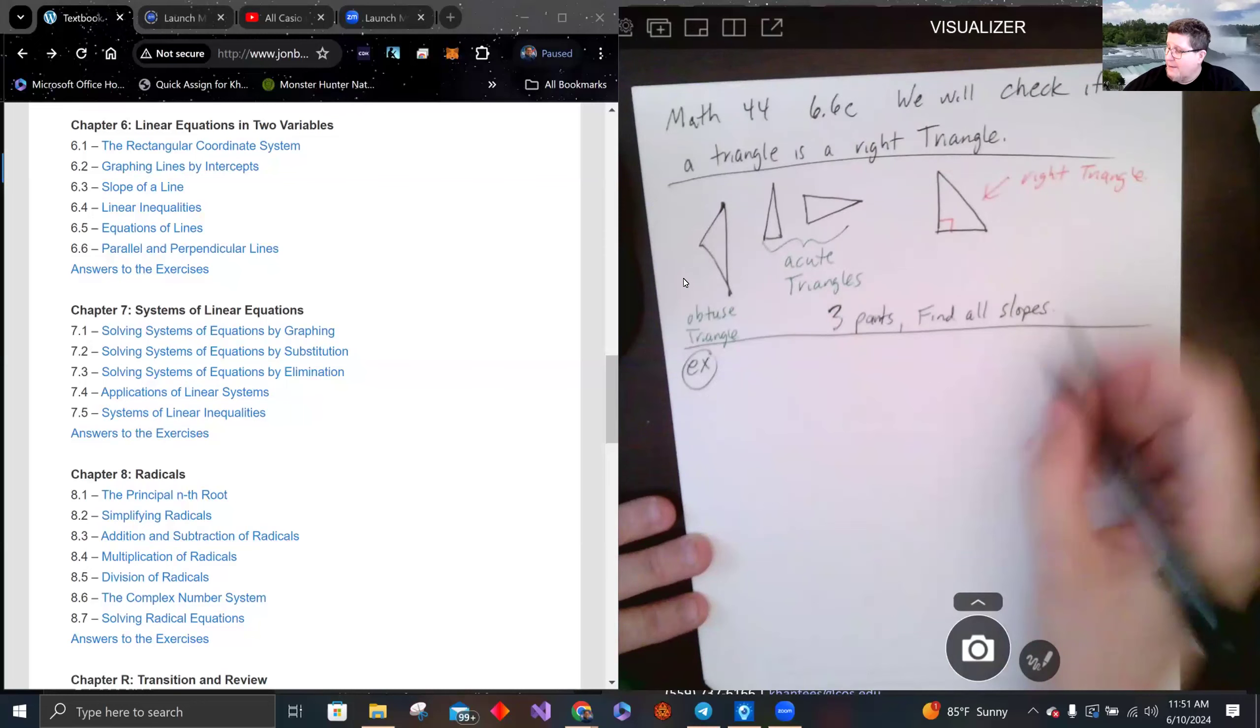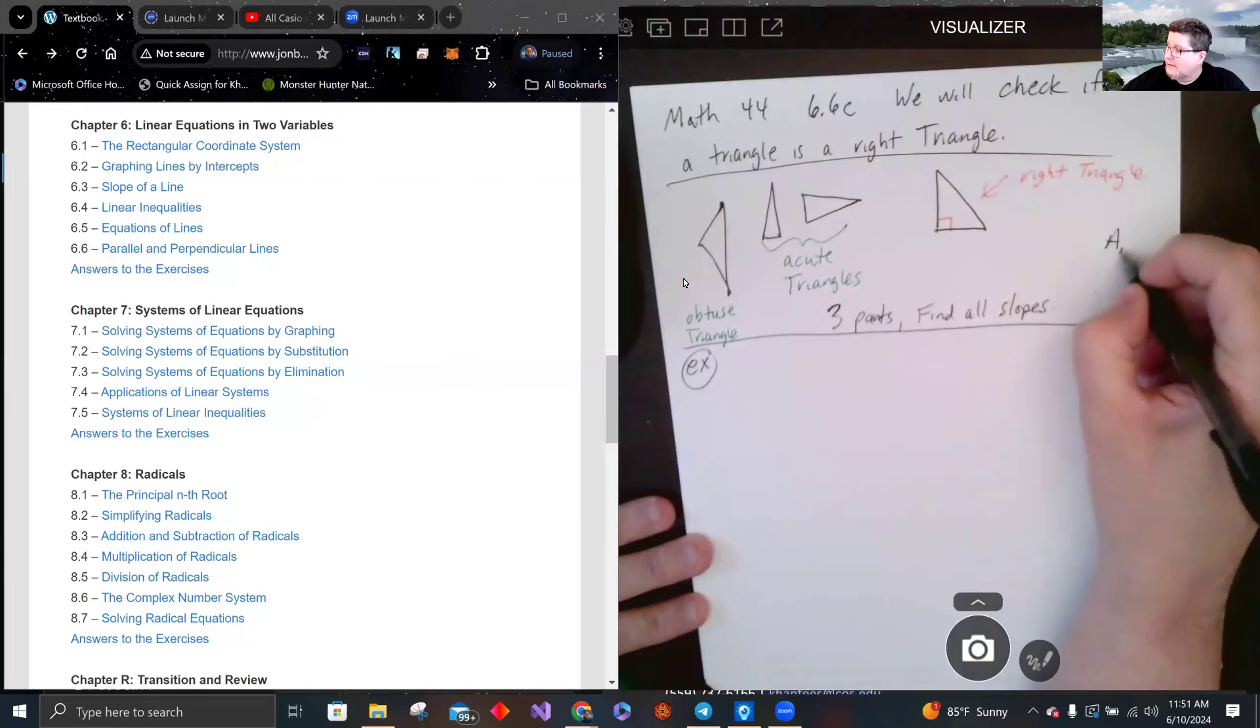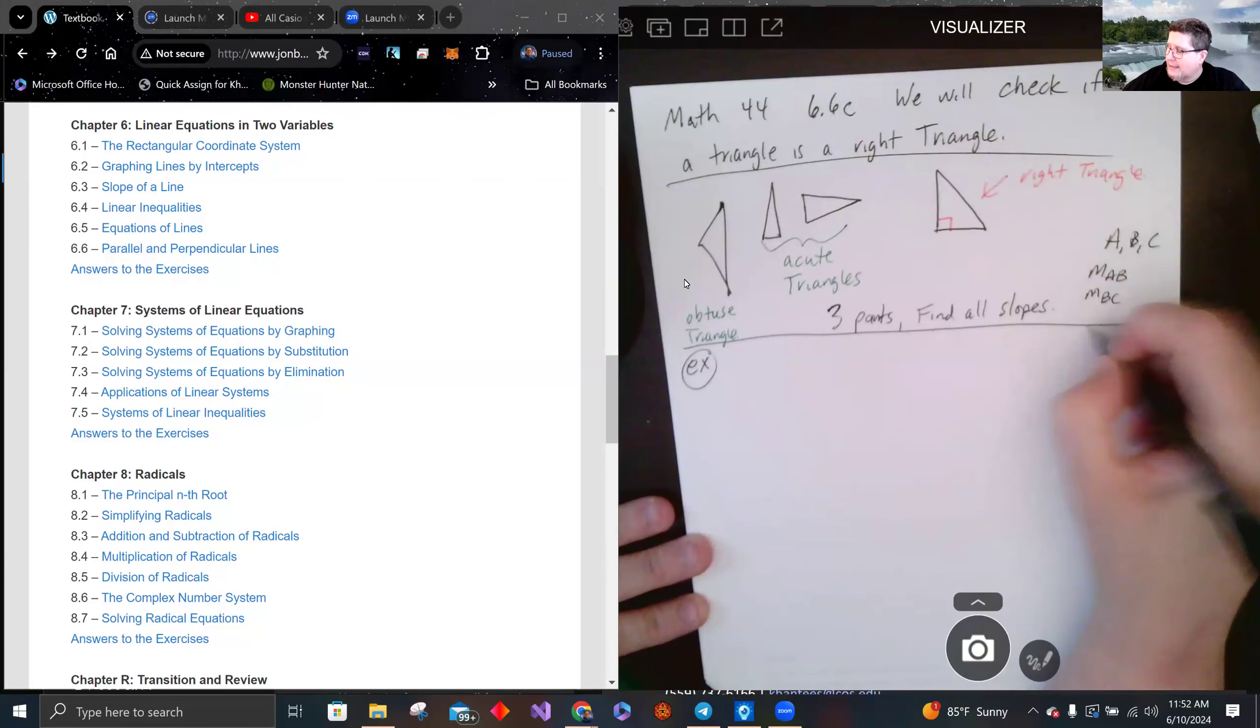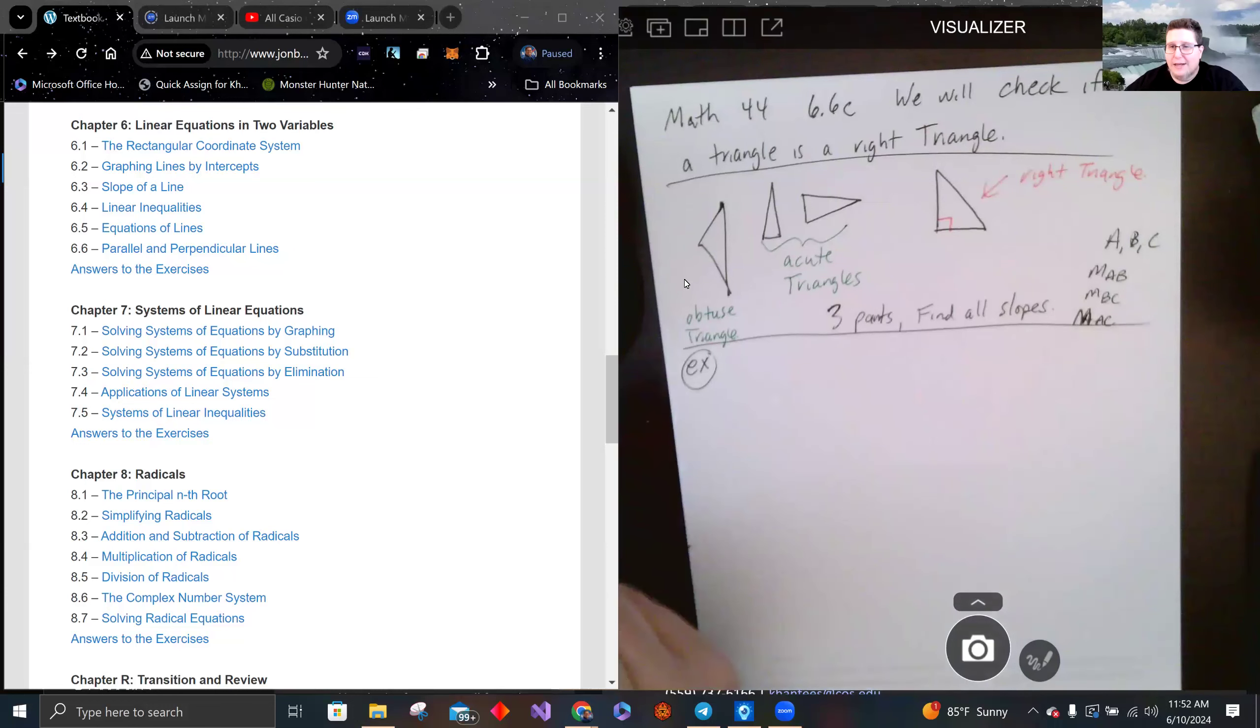So like if we have A, B, and C, find m_AB, m_BC, m_AC, and see if one of them is the negative reciprocal of the other.